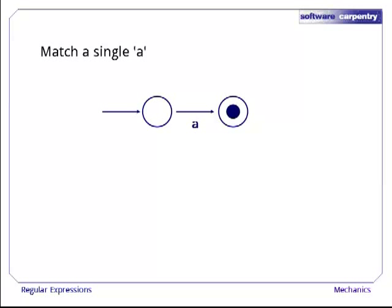Here's a very simple finite state machine that matches exactly and only the single character lowercase a. We start matching with the incoming arrow on the left. It takes us to the first state in our finite state machine. The only way to get from there to the second state is to match exactly one character, because the arc between state one and state two is labeled with the character a.